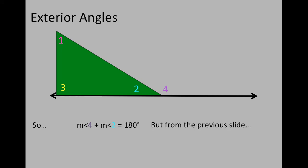From previous slides, we know that the three measures of the triangle are also 180 degrees. So the measure of angle 1 plus the measure of angle 3 plus the measure of angle 2 is 180.